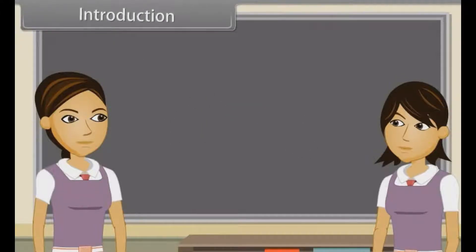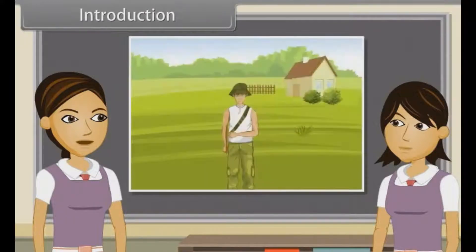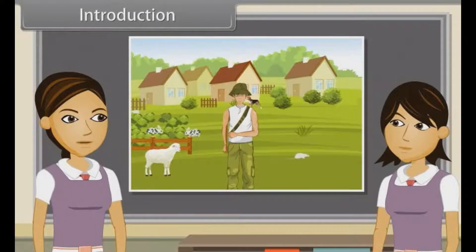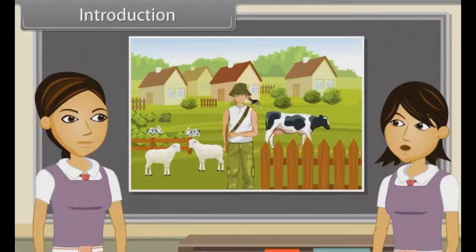We know that plants and animals were present on this planet before the human race evolved. As man started using plants and animals for its basic needs, he started giving names to plants and animals in their own language. A common name is a name in general use within a community, and it is often contrasted with a scientific name.